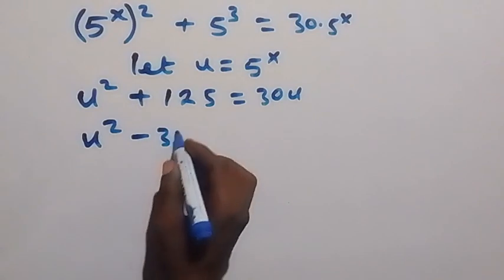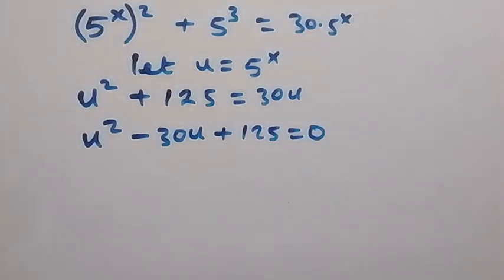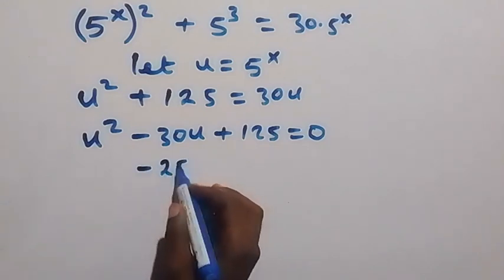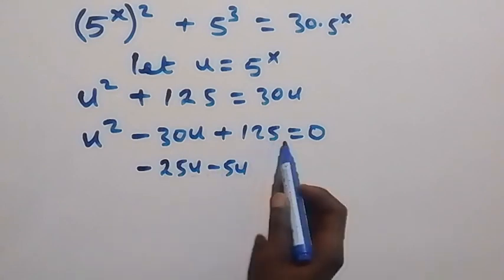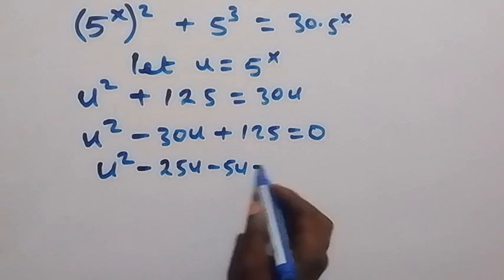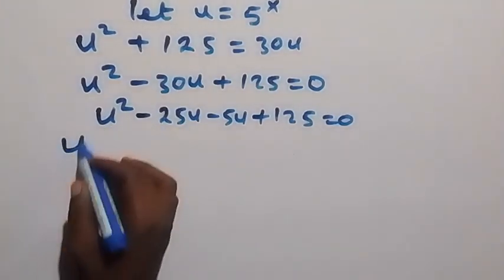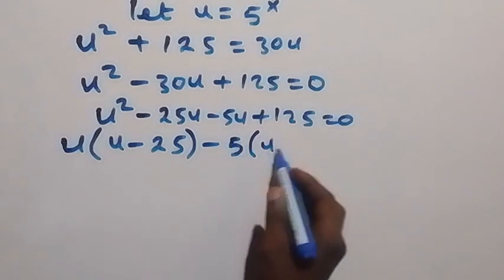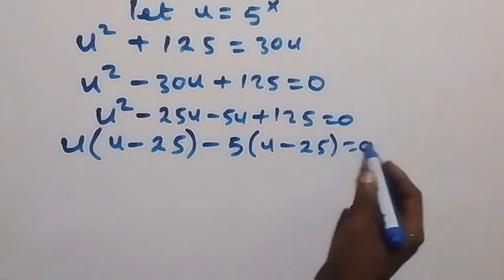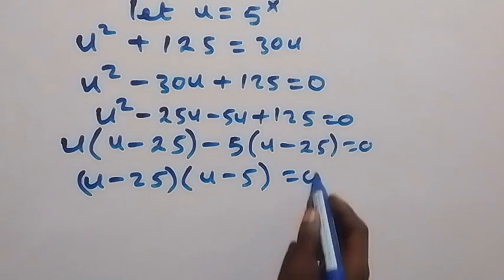Taking 30u to the left side, we form the equation u squared minus 30u plus 125 equals zero. Factorizing this, we look for two factors: minus 25u and minus 5u, since they sum to minus 30u and multiply to plus 125. This gives us u(u minus 25) minus 5(u minus 25) equals zero, so (u minus 25)(u minus 5) equals zero.